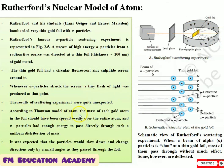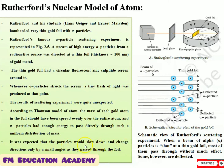According to Thomson's model of the atom, the mass of each gold atom in the foil should have been spread evenly over the entire atom — the mass is uniformly spread. An alpha particle had enough energy to pass directly through such a uniform distribution of mass. It was expected that the particles would slow down and change direction only by a small angle as they passed through the foil.